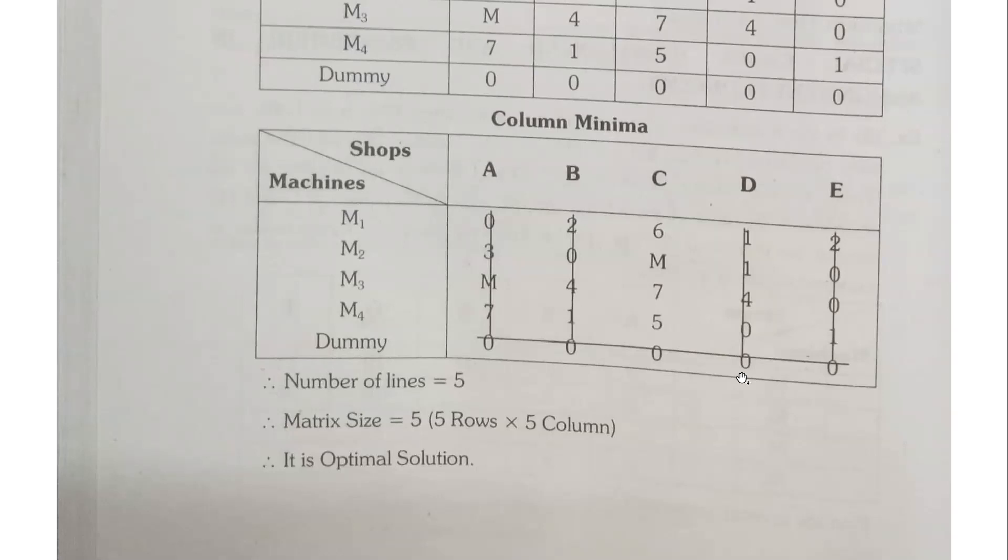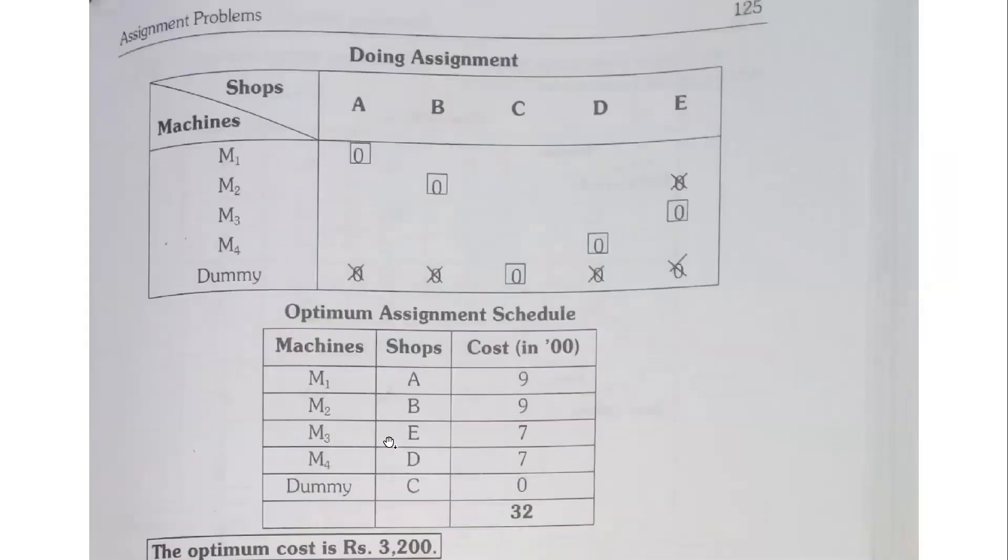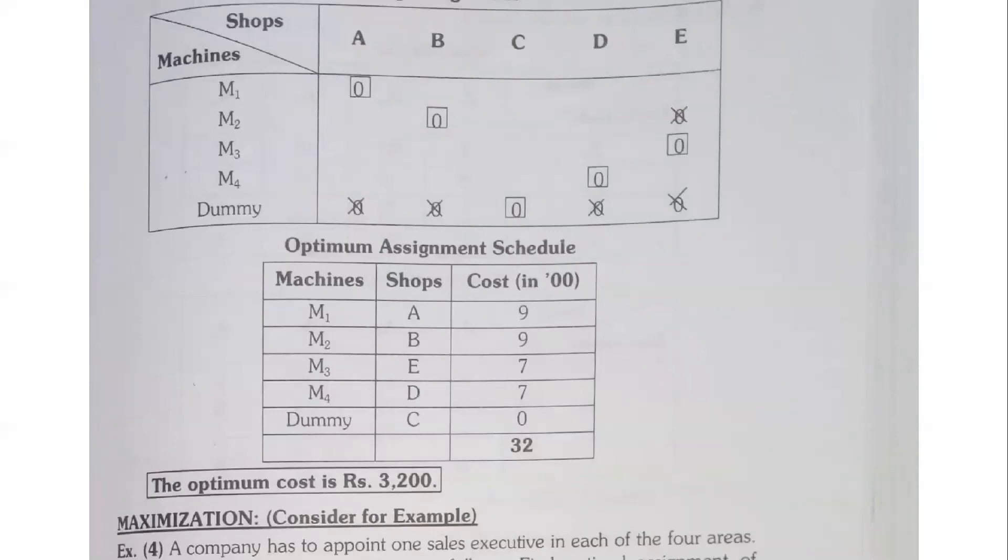Now number of lines are 5 and matrix size is 5 into 5, so it is an optimal solution. After getting an optimal solution, we can assign problems to all the shops and machines where there are single options. M1 is A, M2 is D, and E is dummy. We have to write how much cost: 900, 700, and 0, total comes to 3200.